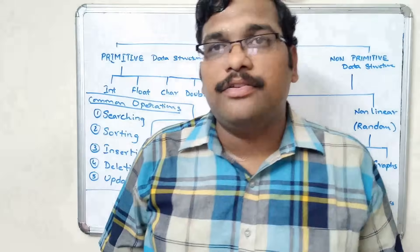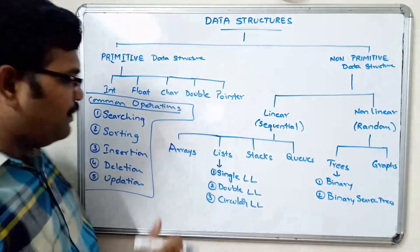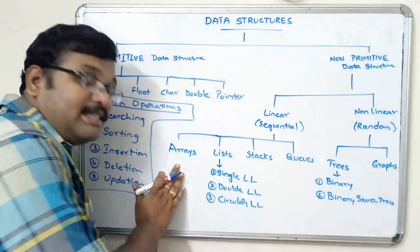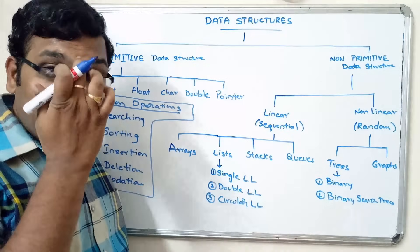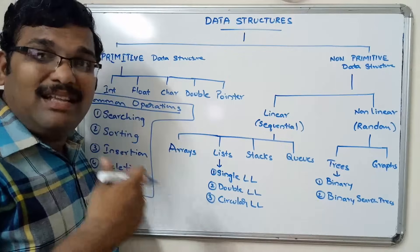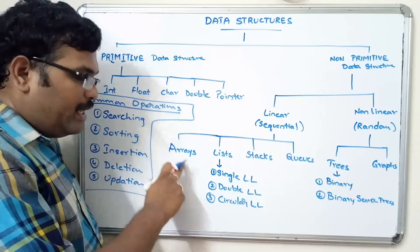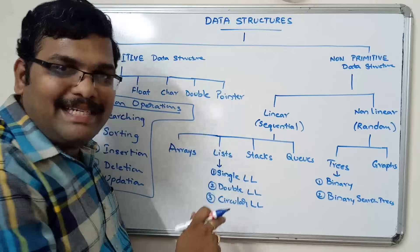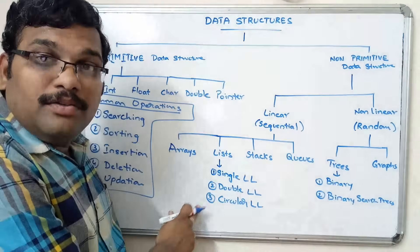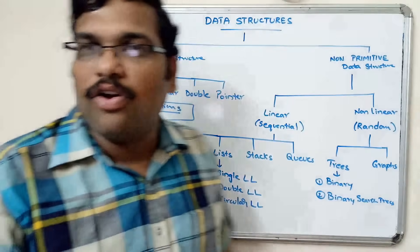So let us stop here. From the next session we will start with arrays. Since arrays were already covered in C, we will look at the advantages and disadvantages, then move on to lists. In the coming sessions we will cover all these concepts.